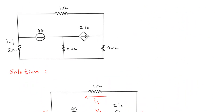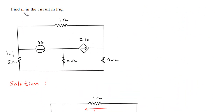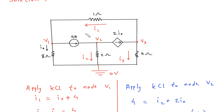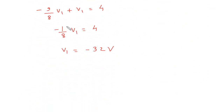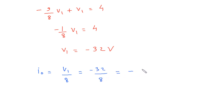What we have to find? We have to find IO. IO is equal to V1 minus 0 by 8, which is minus 32 by 8. This gives minus 4 ampere. Therefore IO is equal to minus 4 ampere.